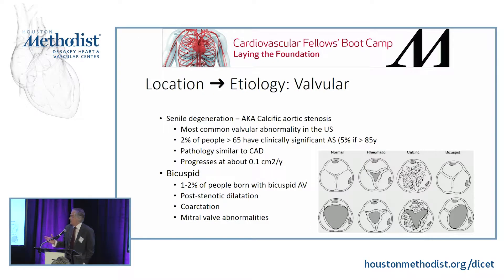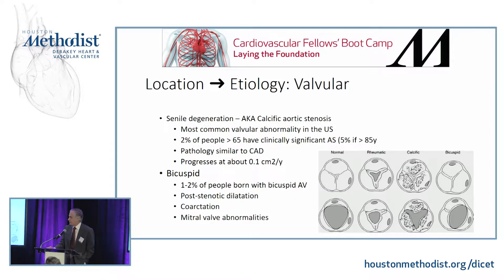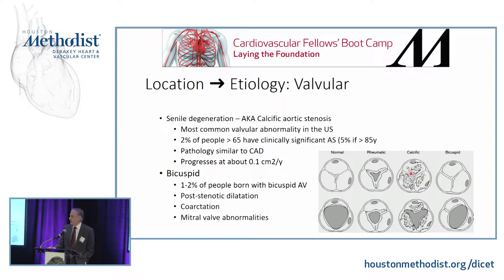The location of the stenosis gives you a very good handle on what is causing it. In the U.S., our major cause is senile or calcific aortic stenosis, where you have a large amount of calcium deposited in the leaflets and in the commissures. The pathology is very similar to atherosclerotic disease — beginning with endothelial damage and inflammation, followed by white cell infiltration, lipid deposition, and finally calcium deposition. This progresses at about 0.1 centimeters squared per year once it gets started.